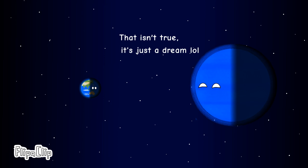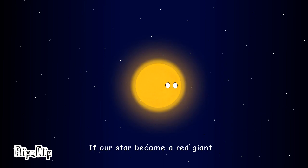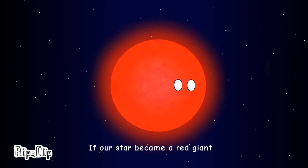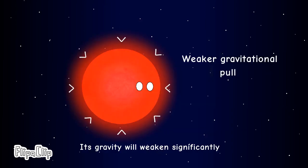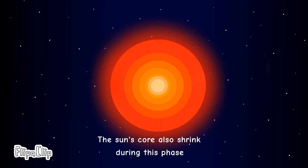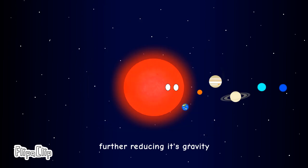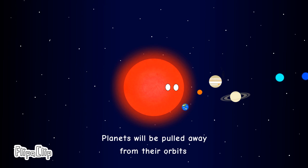That isn't true, it's just a dream! I'll explain. If our star became a red giant, its gravity will weaken significantly. The sun's core will also shrink during this phase, further reducing its gravity. Planets will be pulled away from their orbits.